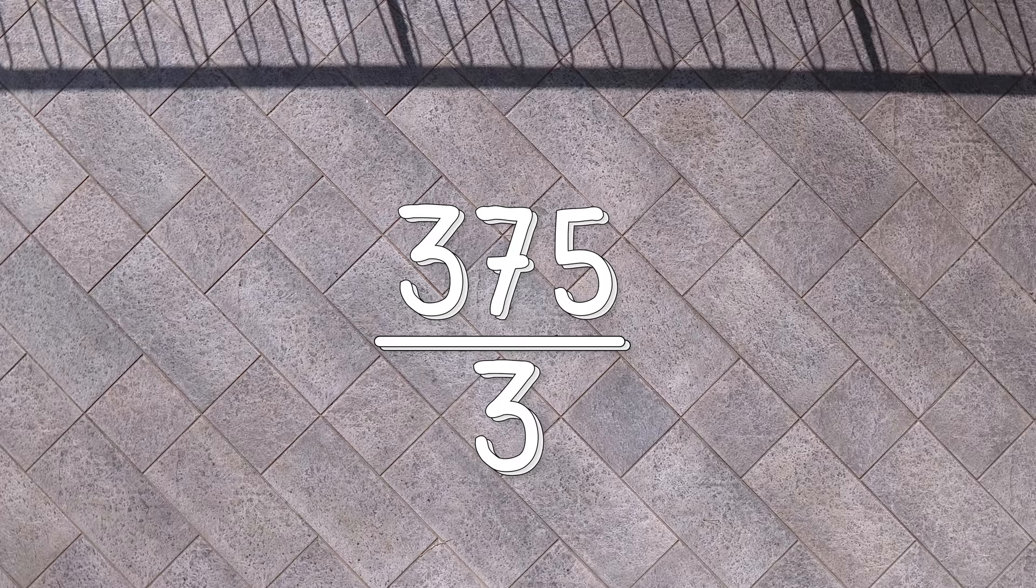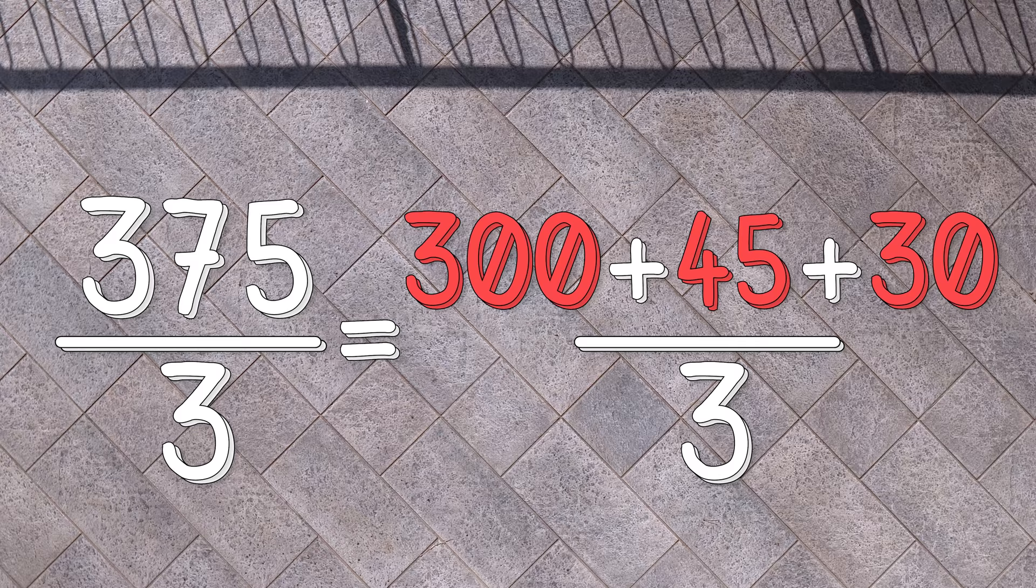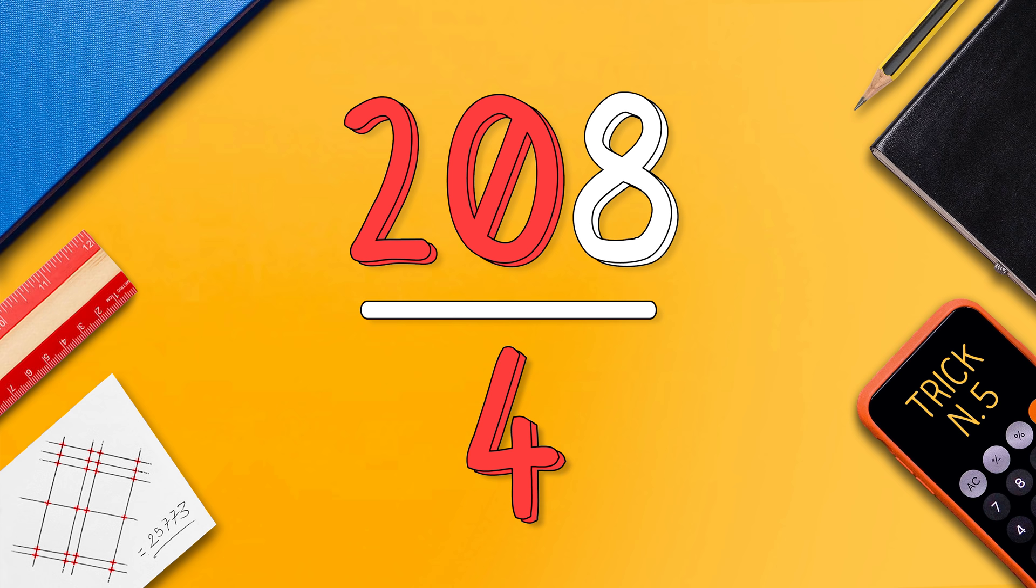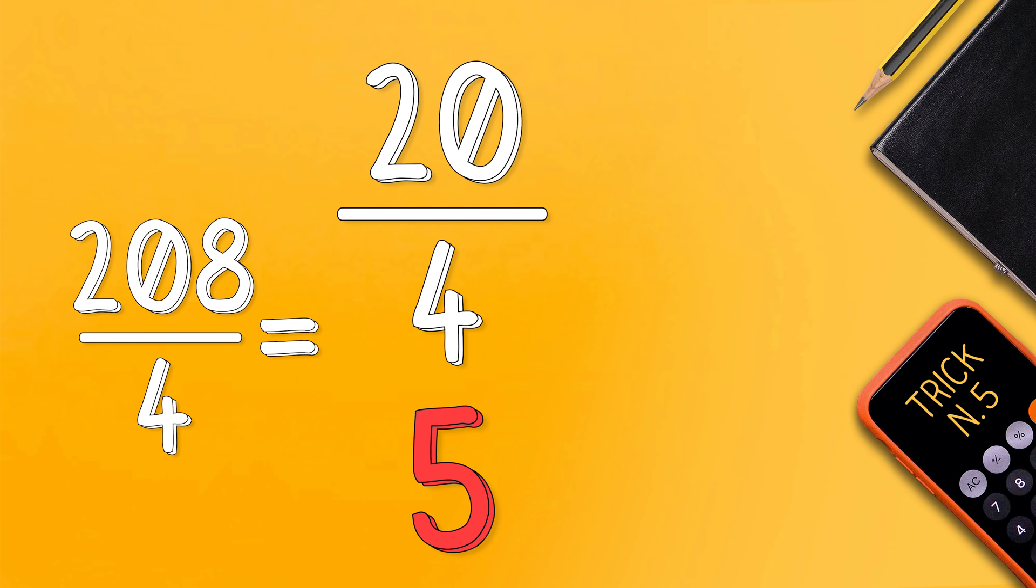In this case you simply need to find numbers on top that are multiples of the numbers on the bottom. For example 208 divided by 4. We know that 20 is a multiple of 4 and also 8 is a multiple of 4. So 20 divided by 4 is 5 and 8 divided by 4 is 2. And this gives you 52. It's really that easy.